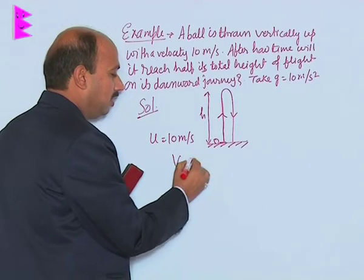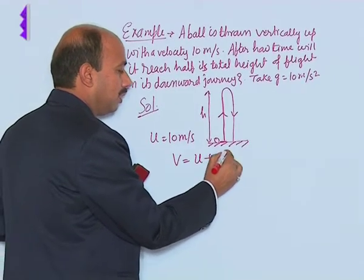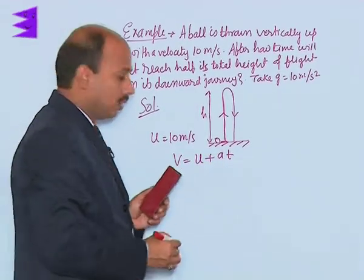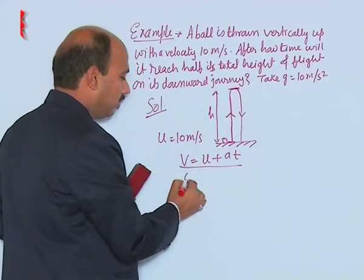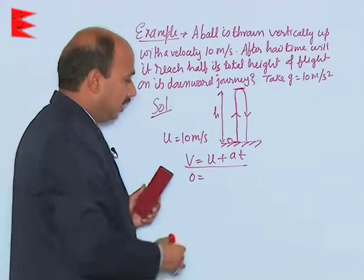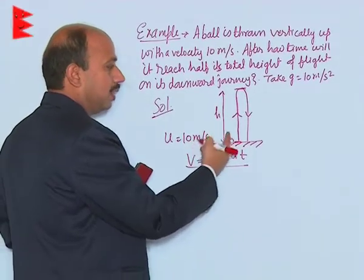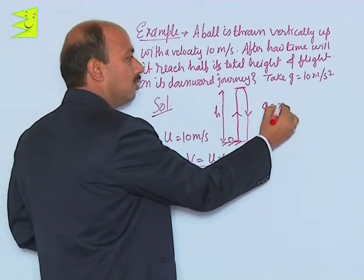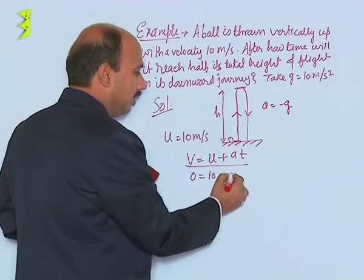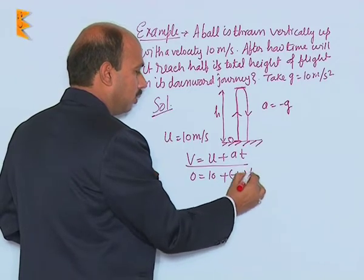We will write equation V is equal to U plus A t. Now we will replace all that. At the highest point final velocity will be 0, initial velocity is 10. I am taking plus because it is up, plus A, acceleration is downward that is always minus g, we write minus 10 into t.